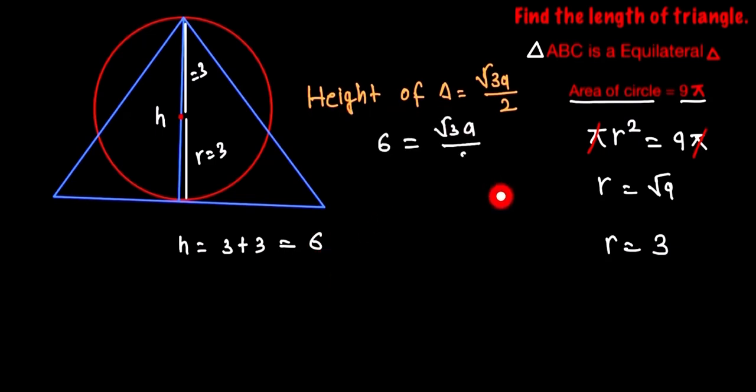6 is equal to √3a/2, so here √3a is equal to 12. So here, 12 can be written as 4 times 3, so √3a is equal to 4 times 3.